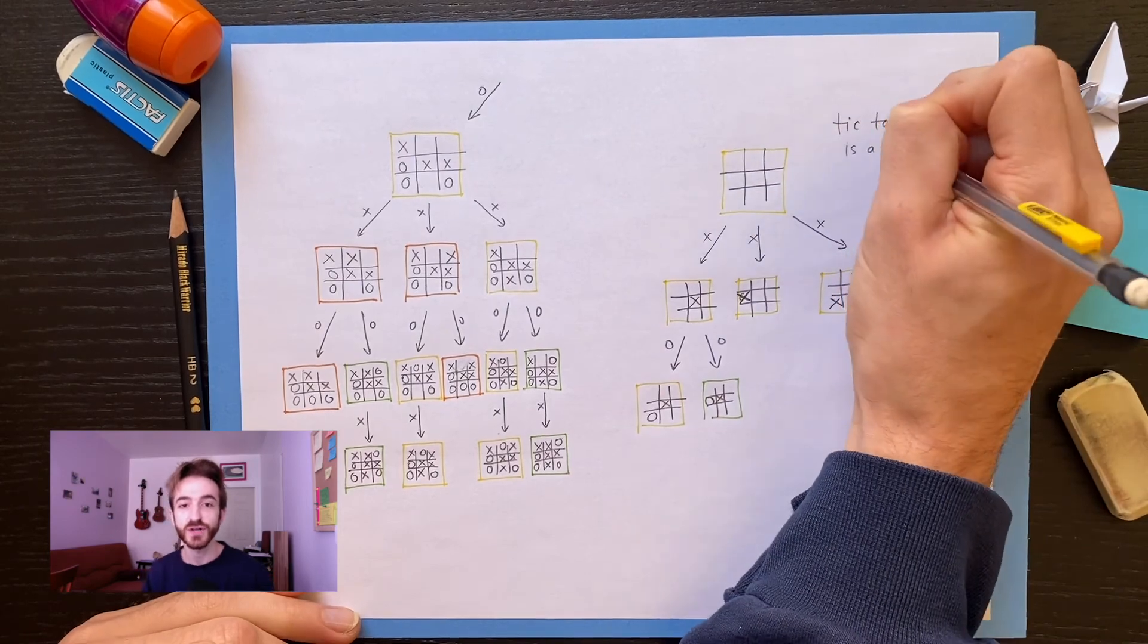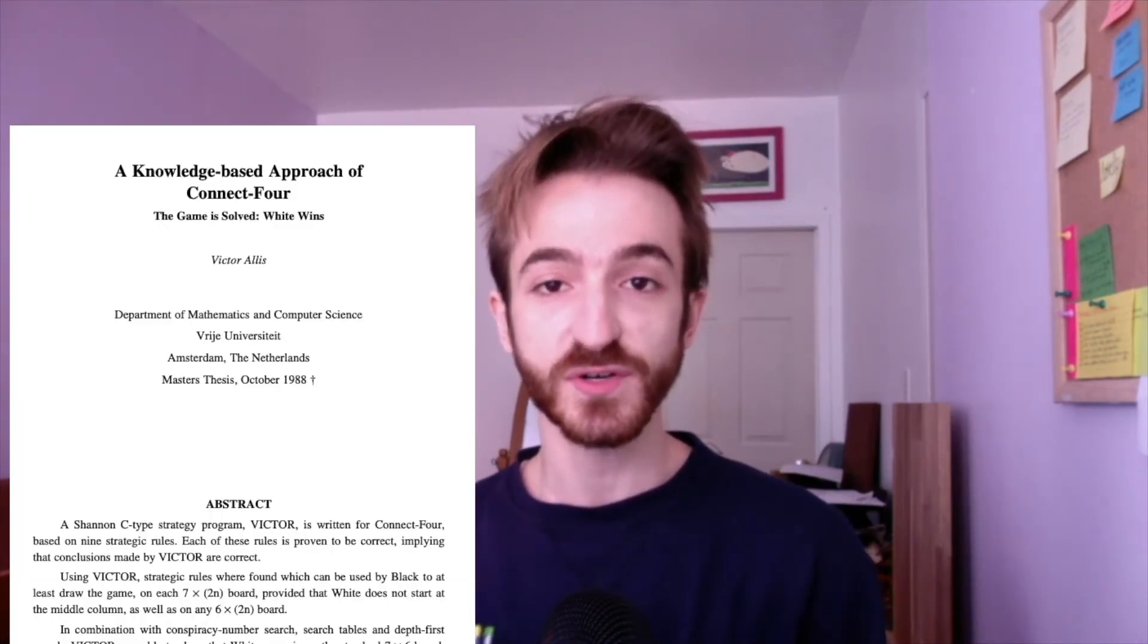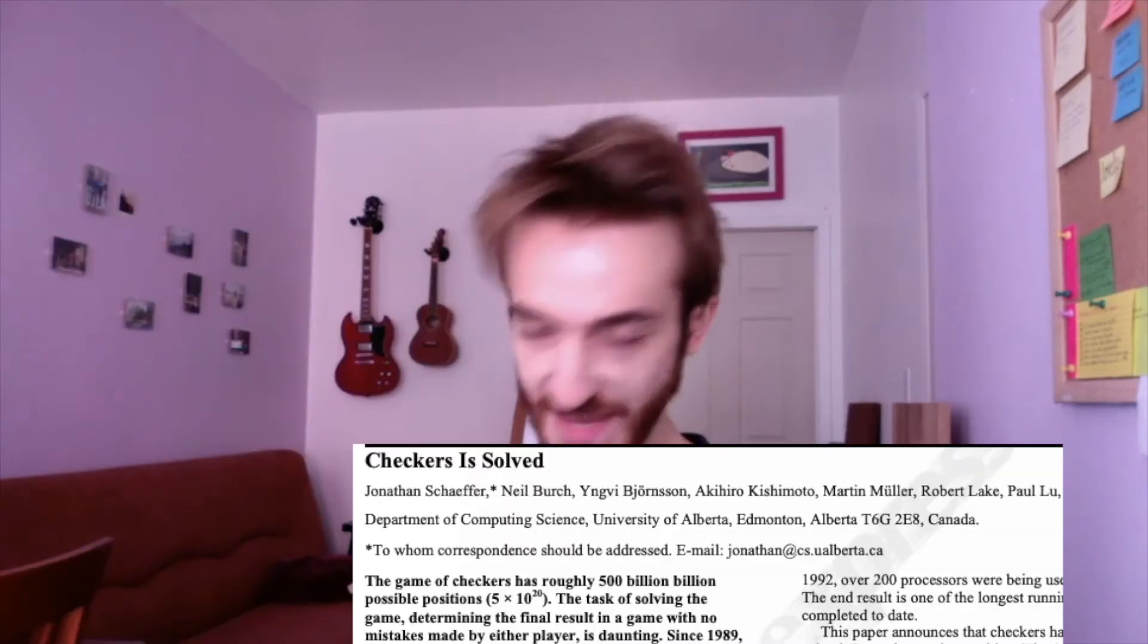Tic-Tac-Toe is an example of something that's called a solved game, where a computer, or a set of supercomputers, has gone through and figured out every possible way the game can go. They know who wins and what the perfect strategy is. Another solved game is Connect Four. Connect Four, it turns out, is a win for the first player if they play really well. And Checkers is also a solved game. Checkers is a forced draw if both players play perfectly.